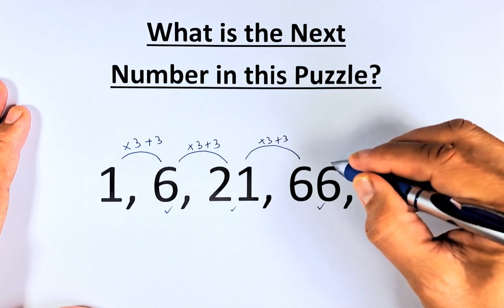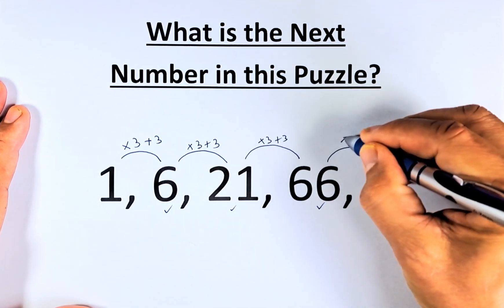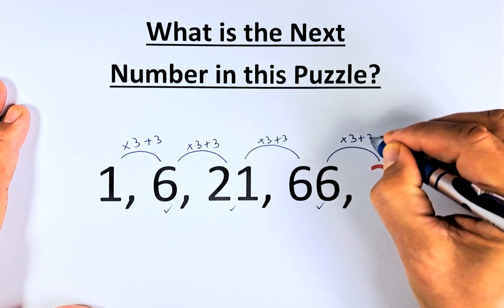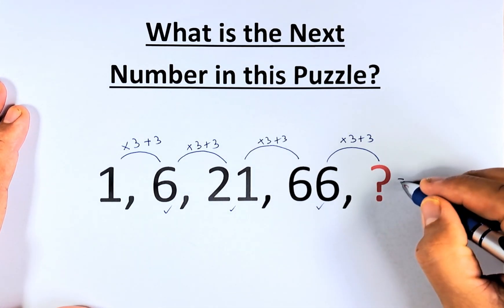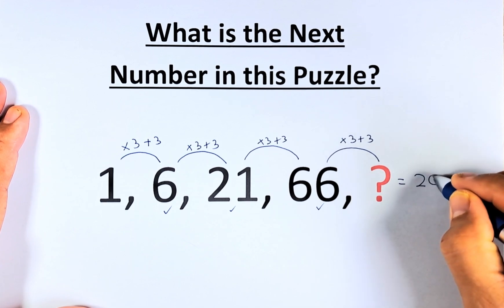So what is 66 to question mark? Again, we are going to multiply by 3 and plus 3. 66 multiplied by 3 is 198 plus 3, and the question mark is equal to 201.